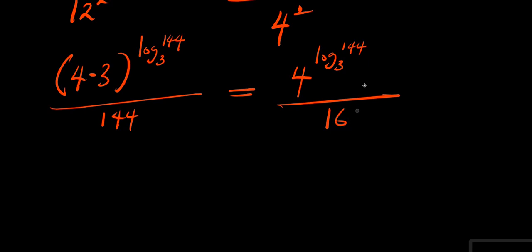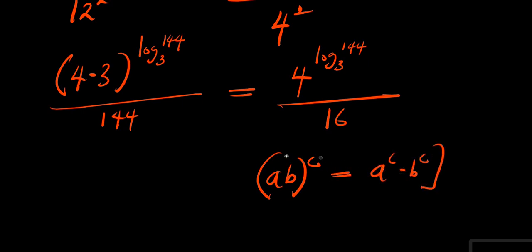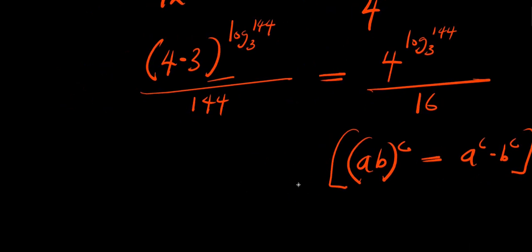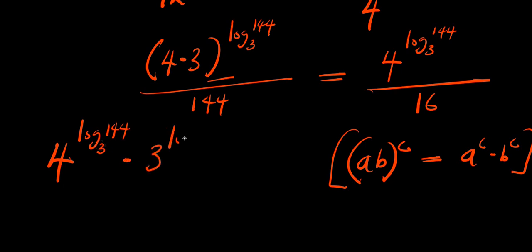We apply the identity: (a times b) to the power c equals a to the power c times b to the power c. So we have 4 to the power of (log 144 to the base of 3) times 3 to the power of (log 144 to the base of 3), and everything is divided by 144.